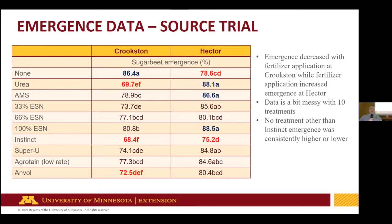The source trials are a little different. In darker blue are the treatments that sorted out near the top; the red ones sorted out near the bottom. At Crookston, the fertilizer application tended to reduce emergence — this is just for spring application since we had an application issue and lost the fall treatments there. The Hector data is for both fall and spring treatments as planned. That site saw essentially some increase, but really no consistency other than Instinct, which tended to sort near the bottom in overall emergence numbers. Yield-wise at Crookston, we had a lower average root yield averaging closer to 18 tons.